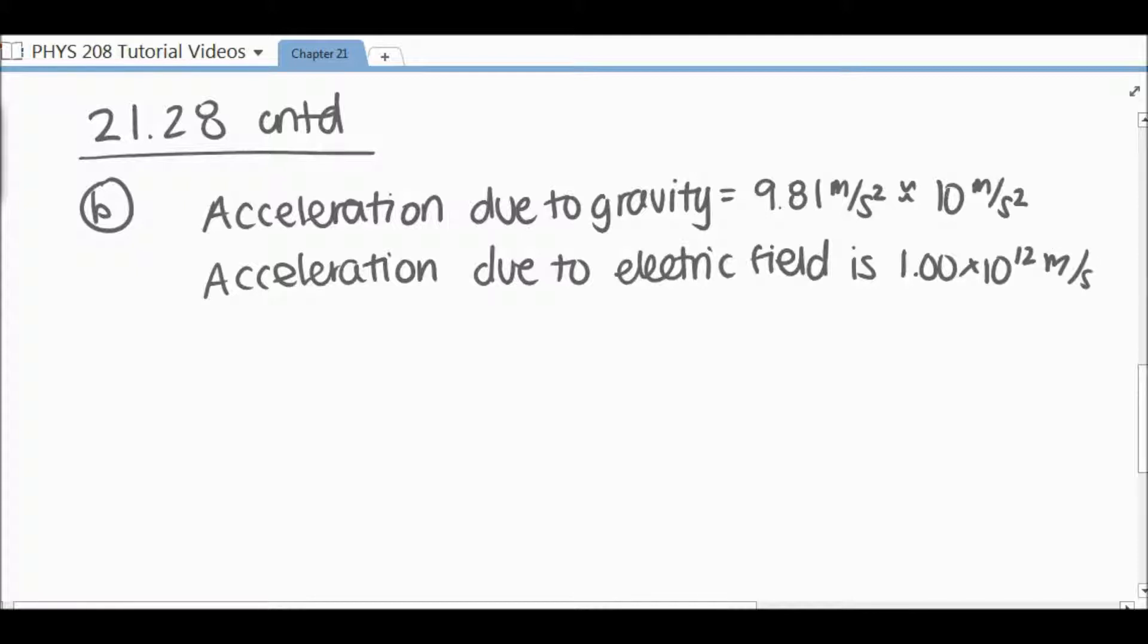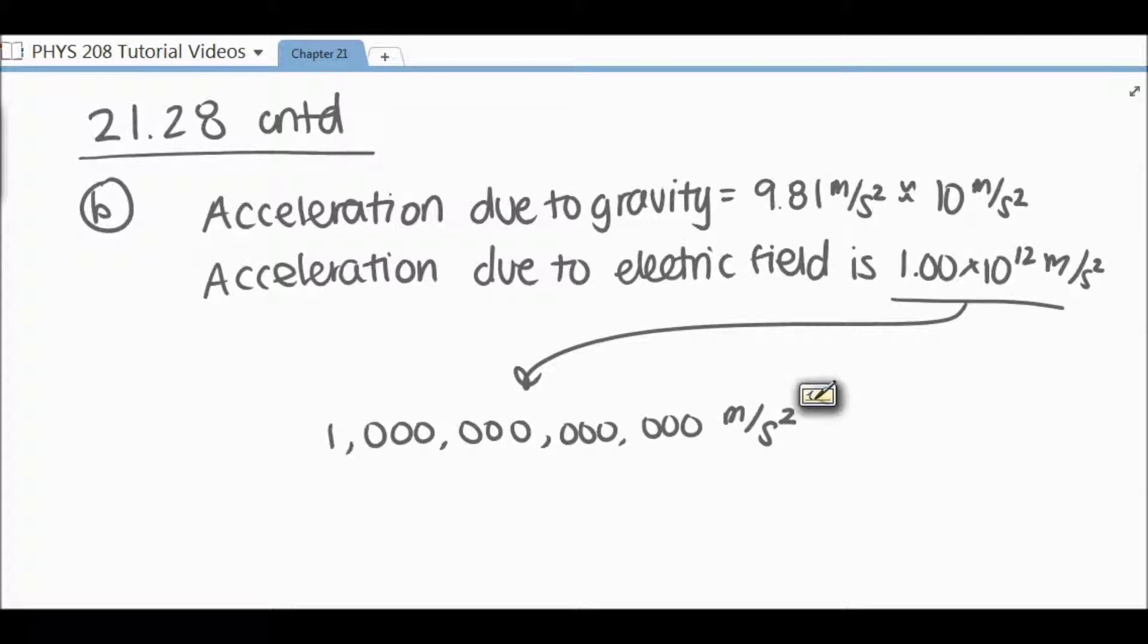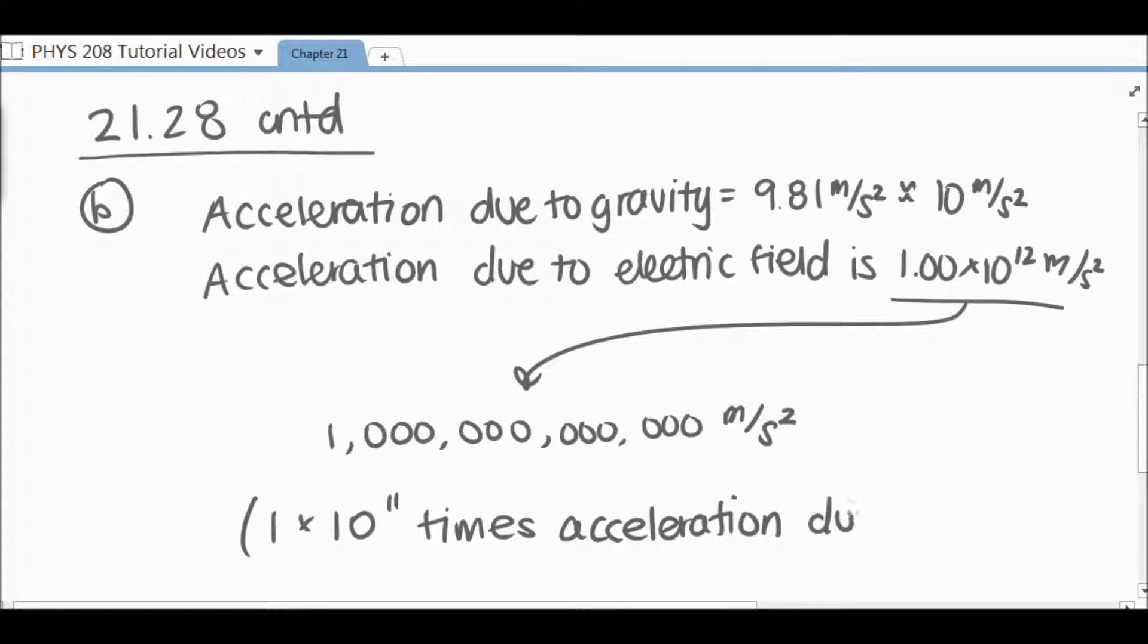Now, I'm going to go ahead and write this out in this instance to give you an idea of just how big this number is. This number is 1 with 12 zeros behind it, which is roughly equal to about 1 trillion meters per second squared. Thus, we can say that this is about 1 times 10 to the 11th times greater than the acceleration due to gravity. That's a significant amount greater.